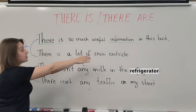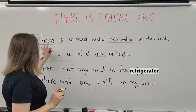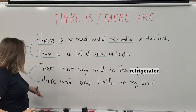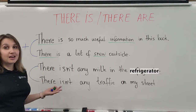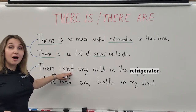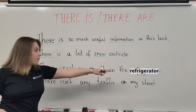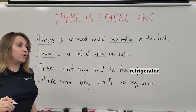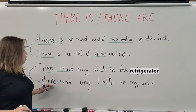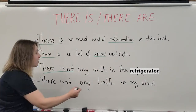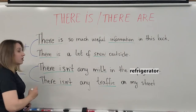The next one: 'There is a lot of snow outside.' Again, 'snow' is a non-count noun, and therefore I'm using the phrase 'there is'. The next two sentences are examples of negative form. In order to create a negative form, we just add the negative particle 'not,' and the form will sound 'there isn't.' 'There isn't any milk in the refrigerator' — milk is a non-count noun, we use 'there isn't.' And the last one: 'There isn't any traffic on my street' — traffic is a non-count noun, so we use 'there isn't'.